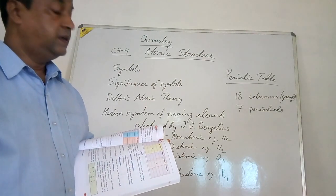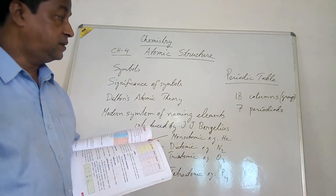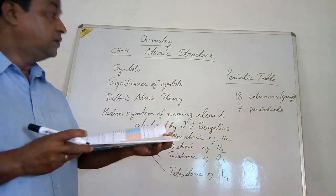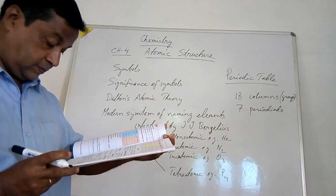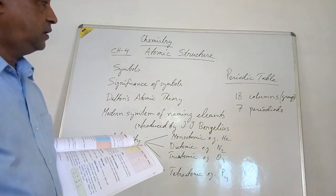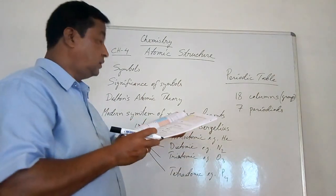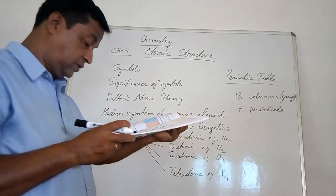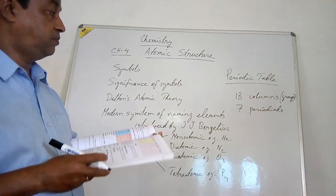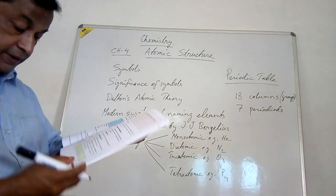The horizontal rows are known as periods, so the seven horizontal rows in the periodic table are called periods. The group number of an element in the periodic table is used to determine the electronic configuration.